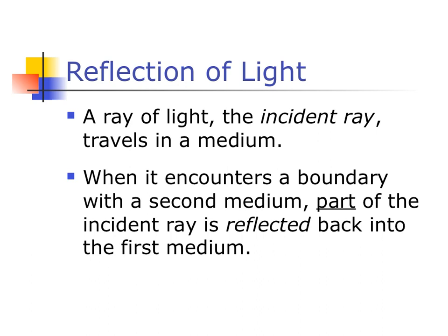The ray is traveling in one medium — we call that the incident ray — and it hits the boundary. When it encounters this boundary, a couple of things can happen: reflection and refraction. Part of the incident ray is reflected and part is refracted. Some of that light bounces back off, which you see when you look at a mirror or a drinking glass. Light can also be absorbed — like a matte black finish where it's not shiny at all and all of the light is absorbed.